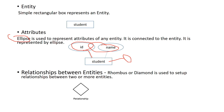Next is Relationship. Relationship means the connection between two entities — it connects two entities together. We use a diamond symbol to represent a relationship.